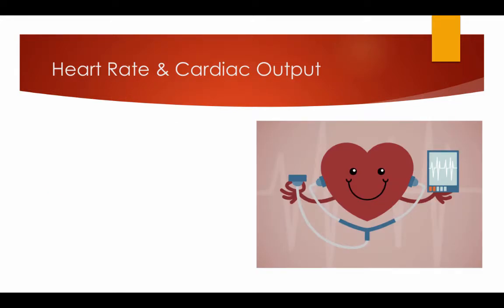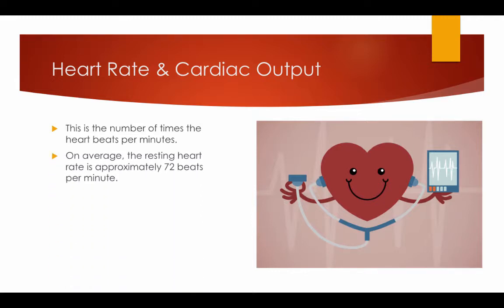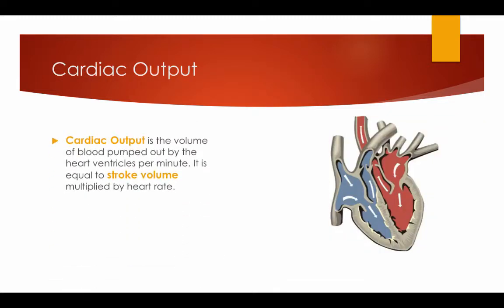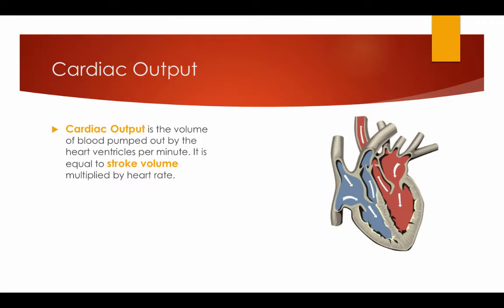Heart rate is the number of times the heart beats per minute. On average, the resting heart rate is approximately 72 beats per minute. Cardiac output is the volume of blood pumped out by the heart ventricles per minute. It is equal to stroke volume multiplied by heart rate — so cardiac output equals stroke volume times heart rate.